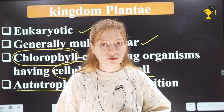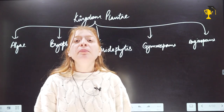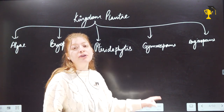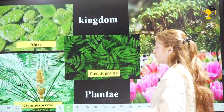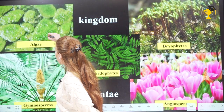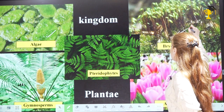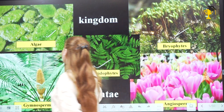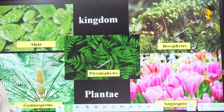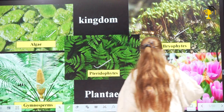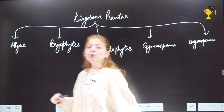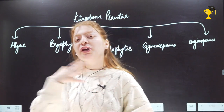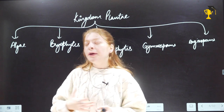Kingdom Plantae is divided into five groups: algae, bryophytes, pteridophytes, gymnosperms, and angiosperms. As we move from algae to angiosperms, the plant body becomes more differentiated — bryophytes and pteridophytes have increasingly well-differentiated roots, stems, and leaves. Let's familiarize ourselves with some important terms so that when you read the chapter, you know what they actually mean.